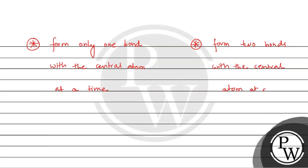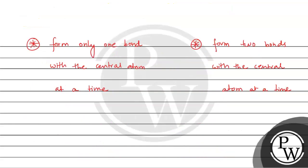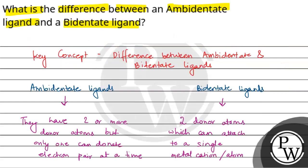So the final answer to this question is: ambidentate ligands are those ligands which have two or more donor atoms, but they can only donate an electron pair from a single atom to the central atom. Bidentate ligands, on the other hand, can form two bonds with the central atom at a single time. Hope you have understood well. Best of luck.